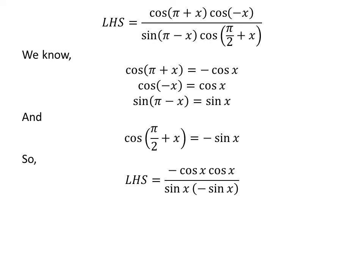Application of the above identities gives us the left hand side of the equation is equal to minus cosine of x times cosine of x, upon sine of x times minus sine of x. Cancelling out the common minus sign in the numerator and the denominator gives us left hand side equal to square of cosine of x upon square of sine of x. As cosine of x upon sine of x is cotangent of x, so left hand side is equal to square of cotangent of x, which equals the right hand side. So we have proved the given equation.